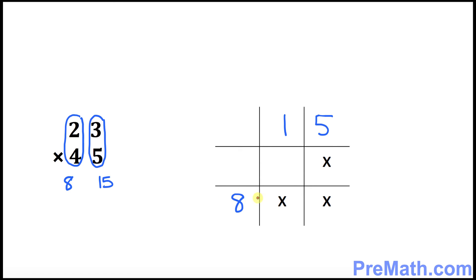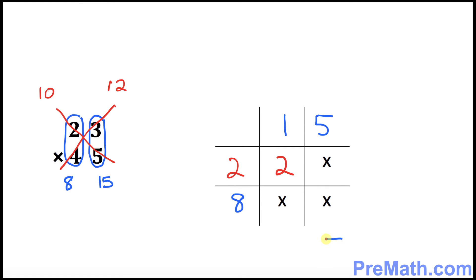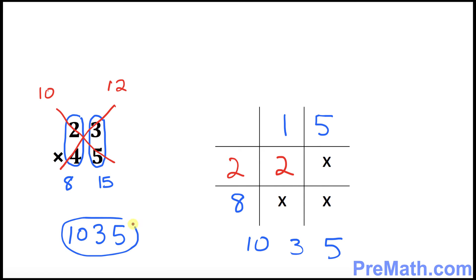Finally, fill out the middle part by cross-multiplying: 2 times 5 is 10, and the other cross multiply gives 12. 10 plus 12 is 22, so 2 goes right here and 2 goes right here. Now let's add them up vertically: 5, then 2 plus 1 is 3, then 2 plus 8 is 10. So our answer is 1035.